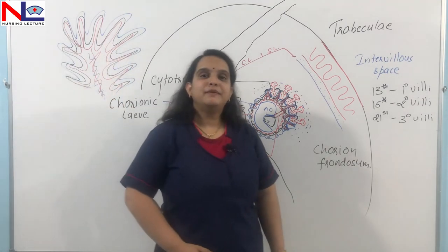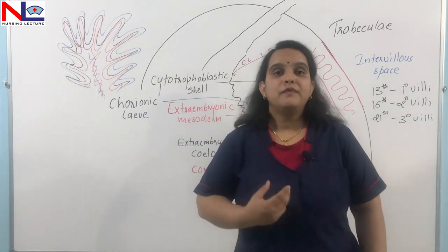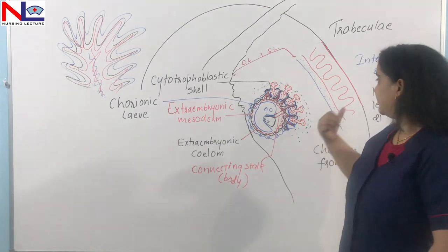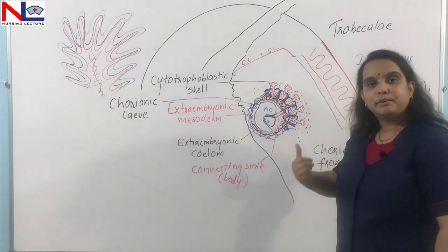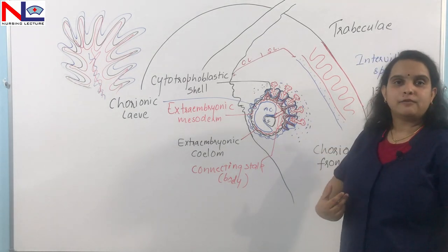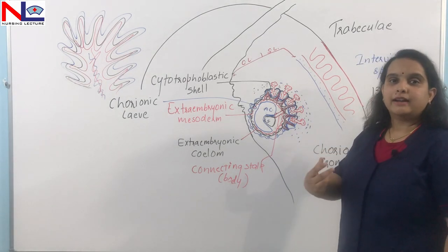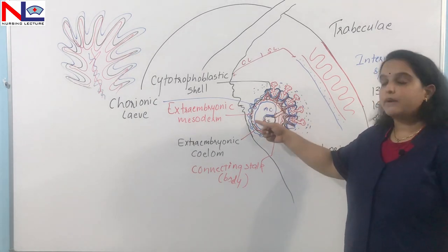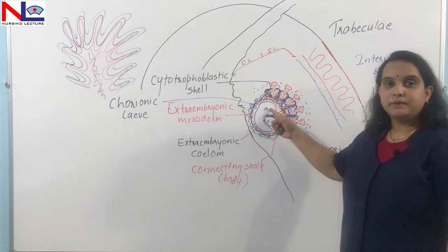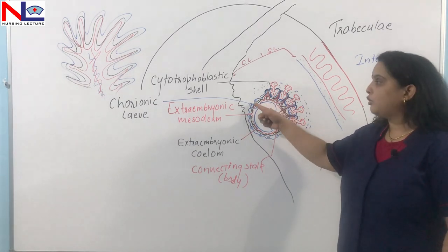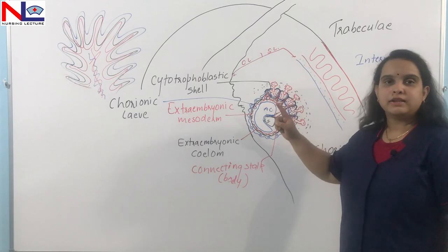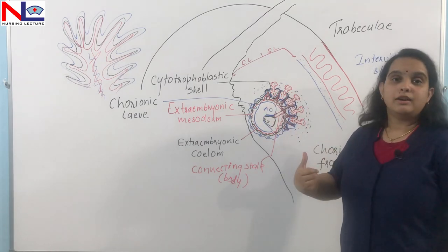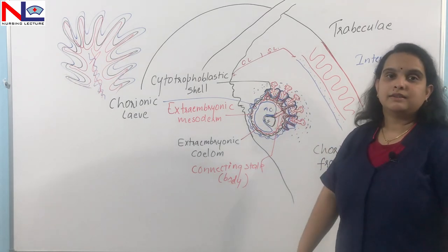In this video we have seen how the functional units of the placenta — the primary, secondary, and tertiary villi — are formed, and how the fetal membranes (inner amnion and outer chorion) and the umbilical cord develop.